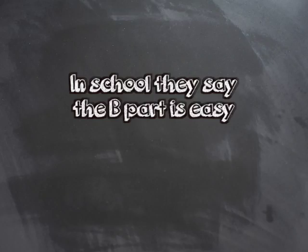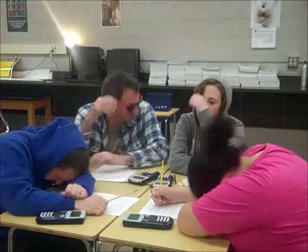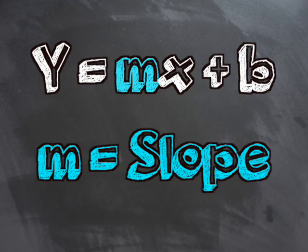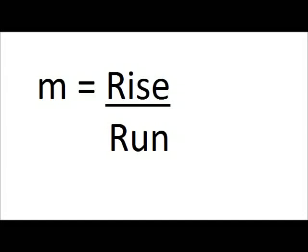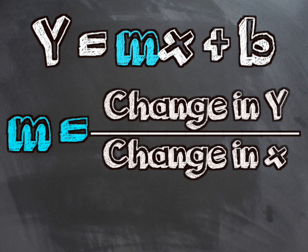In school they say the b part, but still have no hope. Let's talk about the m, which represents the slope. The m is the change of the line — it's rise over run. That means it's change over y, it's change over x, and then you're done.